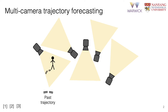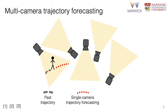Many excellent existing models such as Social LSTM, SOFI, and SocialGAN successfully tackle this task, which we term single camera trajectory forecasting. As shown here in red, this task looks at predicting a future object trajectory in the same camera in which it is observed.